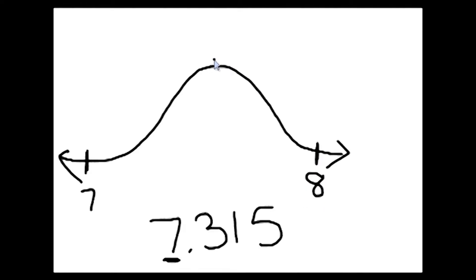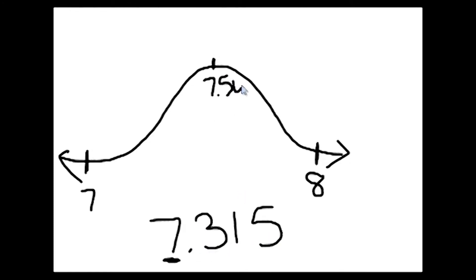Right in the middle of seven and eight is going to be seven and a half — seven point five, seven and five tenths. If it helps you, since I have three digits after the decimal point, you can add some zeros after the five — you can definitely do that.